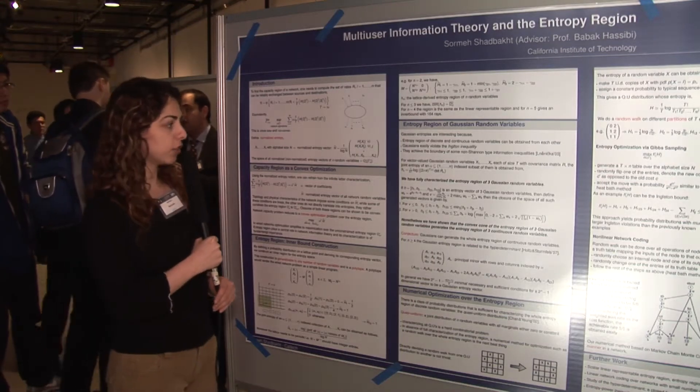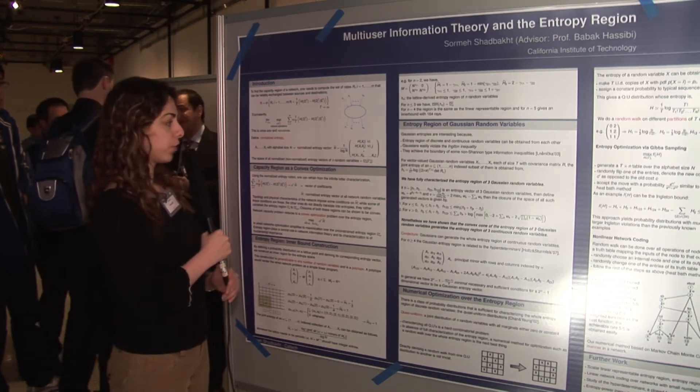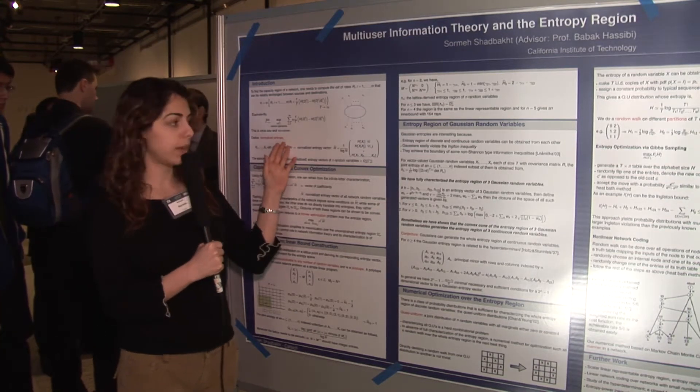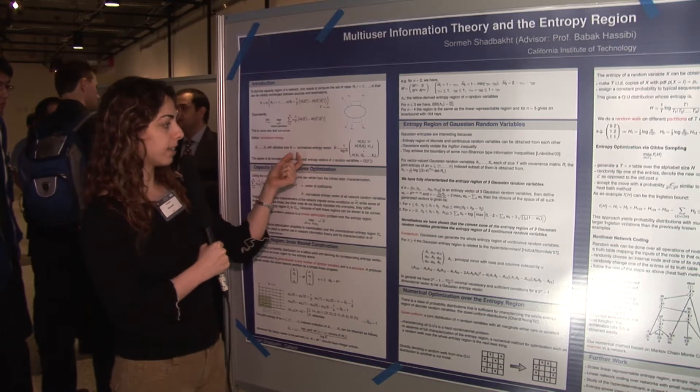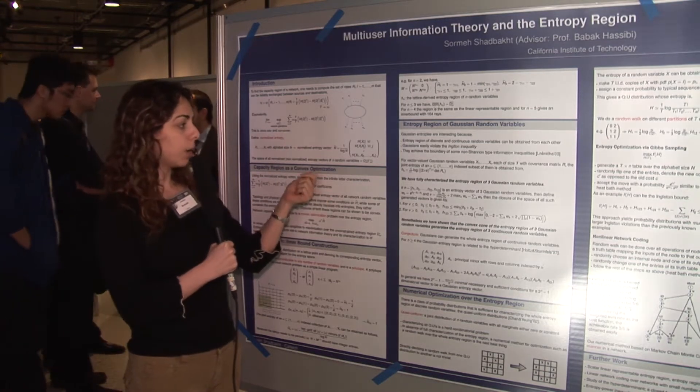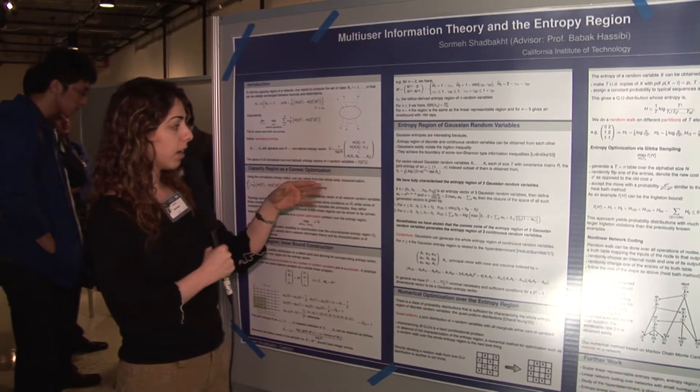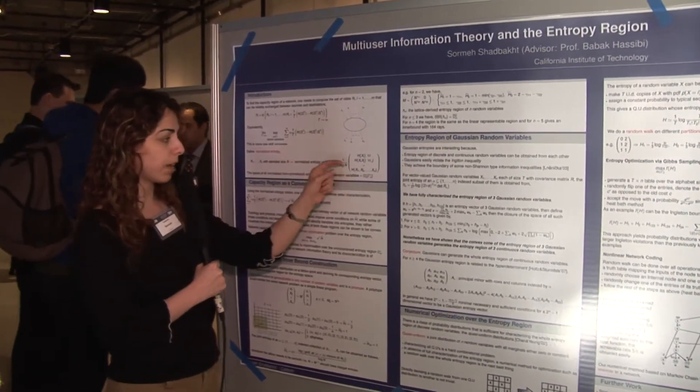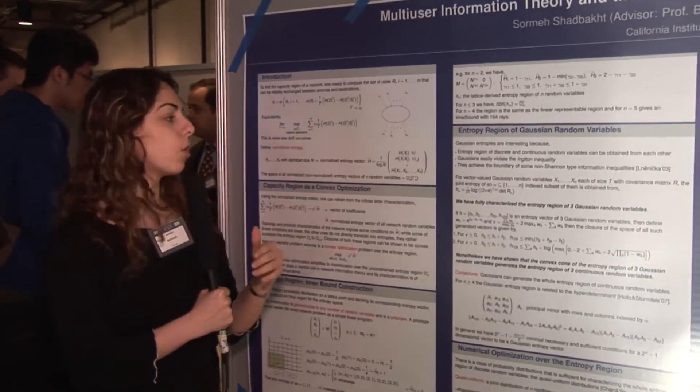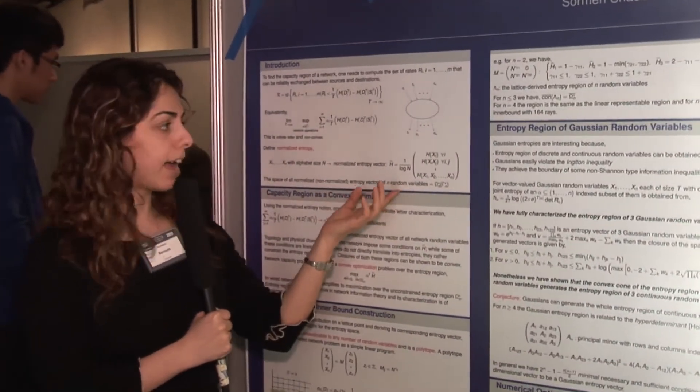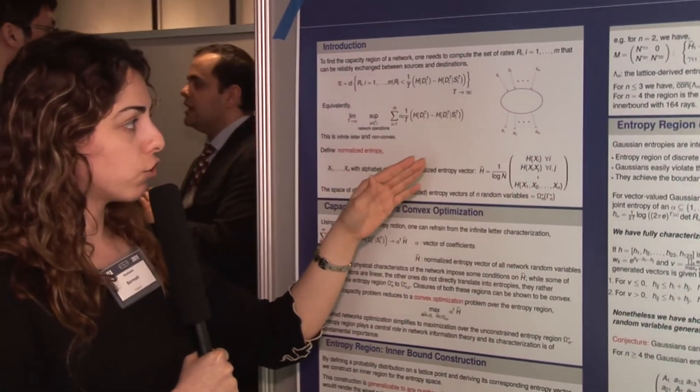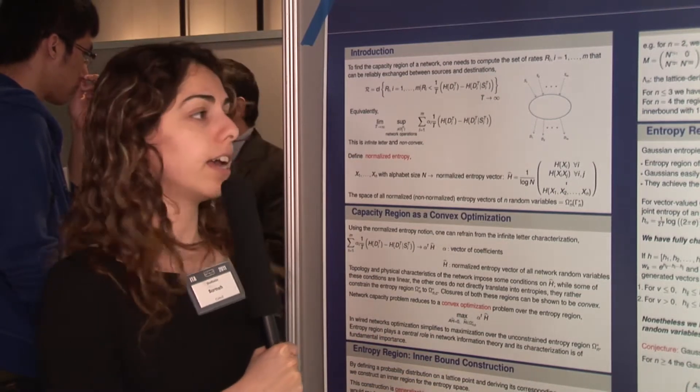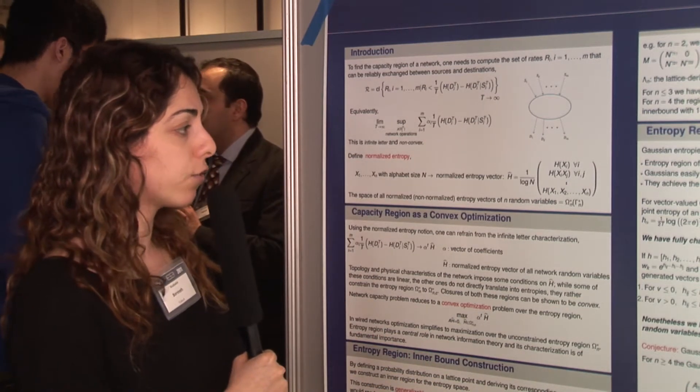In this work, we studied a capacity region of a general network information theory problem. We show that by using the notion of normalized entropy, which is slightly different from the regular entropy vector used in the literature, we define normalized entropy by normalizing the entropy by the log of the alphabet size. By using this normalized entropy, we show that the infinite letter characterization and capacity determination of networks can be avoided.